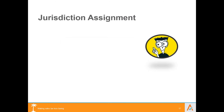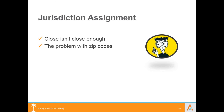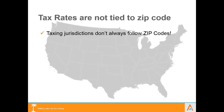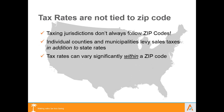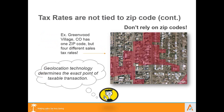70 percent of accounting professionals say their companies conduct sales online, yet only 47 percent remit and file sales tax on those online sales. Now let's talk about jurisdictional assignments. A lot of people think zip codes are sufficient to determine the sales tax rate — you might think zip-plus-four is close enough. But you can have up to a 30 percent margin of error if you use zip codes. There are multiple examples in the U.S. where the same zip code, even the same street, can have multiple sales tax jurisdictions.